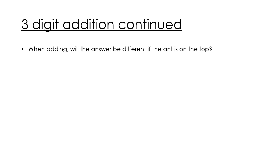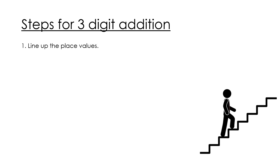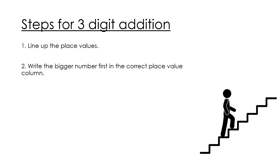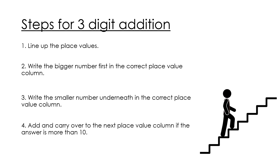Adding three-digit numbers. Where do we start adding from? Whenever the elephant looked for food in the trees, the ant would crawl onto the elephant's trunk and bite the big number first, in the correct place value column. If the elephant shook the ant to the ground, write the smaller number underneath. And for that reason, when we add, we always put the elephant on top and the teeny tiny ant on the bottom. Add and carry over to the next place value column if the answer is more than 10.